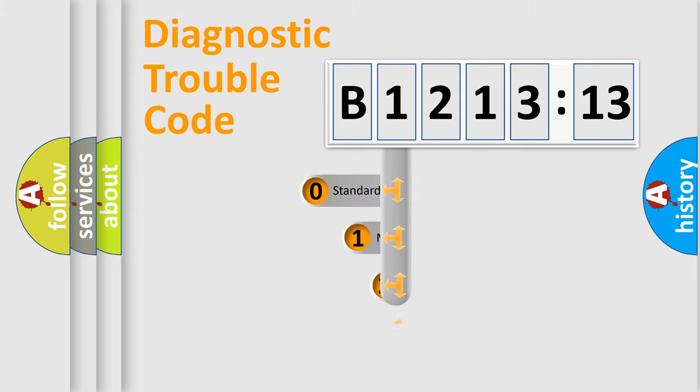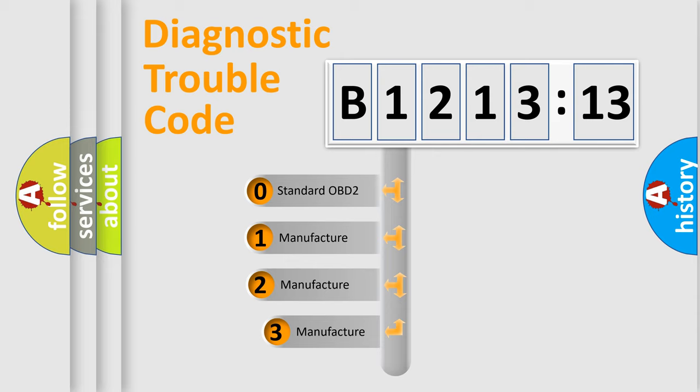Powertrain, Body, Chassis, Network. This distribution is defined in the first character code.